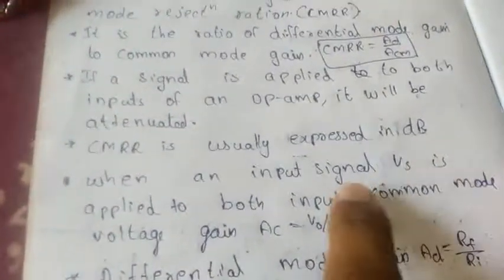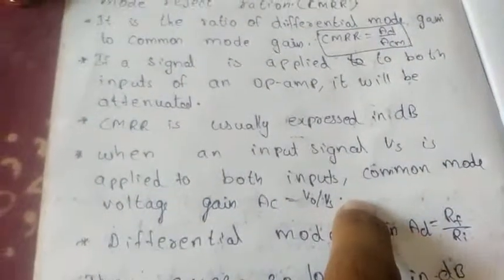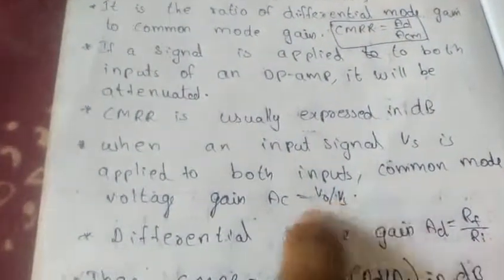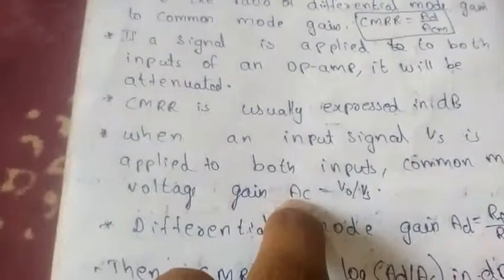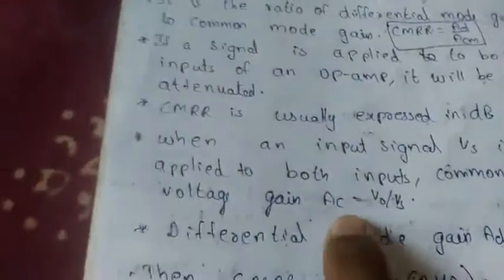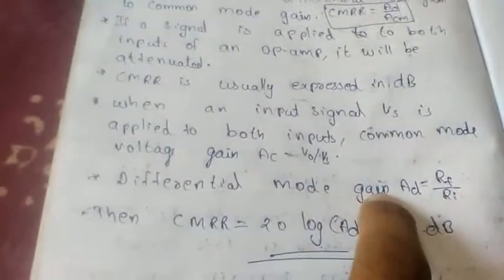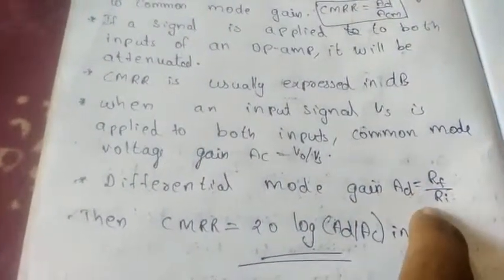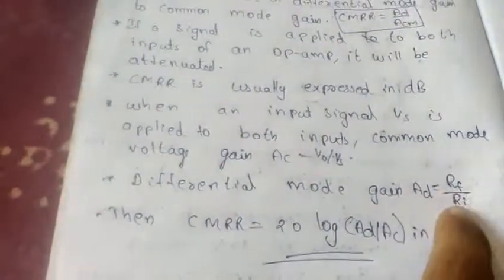When an input signal Vs is applied to both inputs, the common mode voltage gain is Vo by Vs. This is ACM equal to Vo by Vs. The differential mode gain AD equals RF by RI, where RF is the feedback resistor and RI is the input resistance.